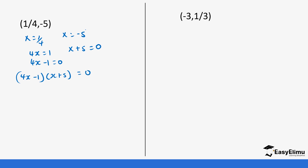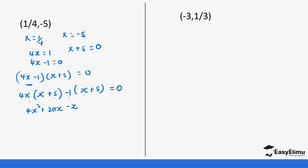Let's expand this expression. So 4x into bracket (x plus five), then negative one into bracket (x plus five), equals zero. So 4x times x gives us 4x squared. 4x times 5 gives us 20x. Negative one times x gives us negative x. And negative one times 5 gives us negative 5. So this is 4x squared plus 20x minus x minus 5, which gives us 4x squared plus 19x minus 5 equals zero.